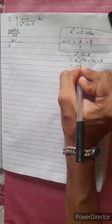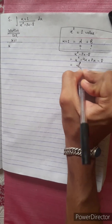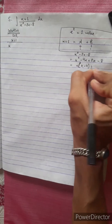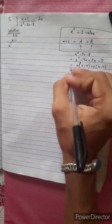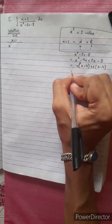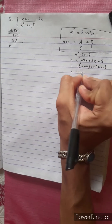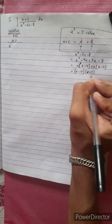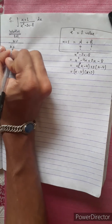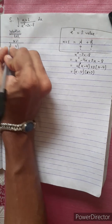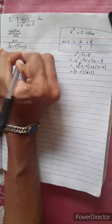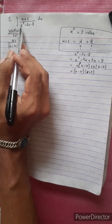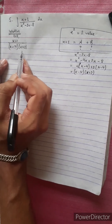Factoring the denominator: x squared minus 4x plus 2x minus 8 equals x(x minus 4) plus 2(x minus 4), which gives us (x minus 4)(x plus 2). So the denominator factors as (x minus 4)(x plus 2).